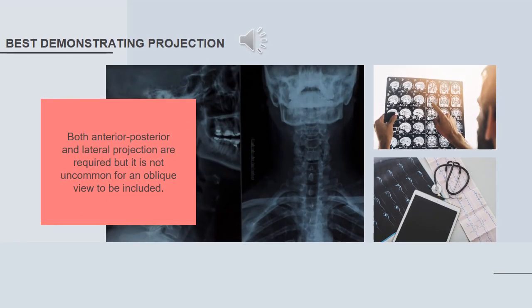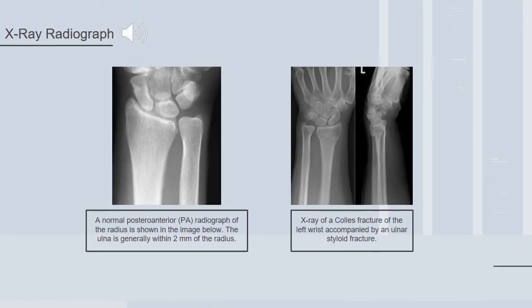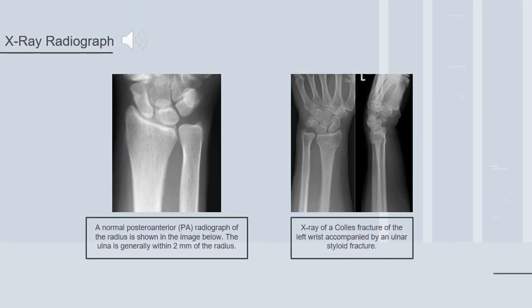If we have a patient with Colles' fracture, both anterior-posterior and lateral projections are required, but it is not uncommon for an oblique view to be included. A normal PA radiograph of the radius is shown in the first image, and in the second image, it is an X-ray of a Colles' fracture of the left wrist accompanied by an ulnar styloid fracture.